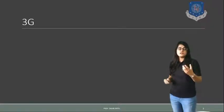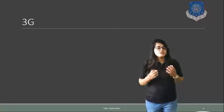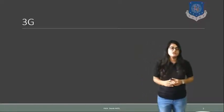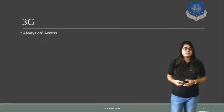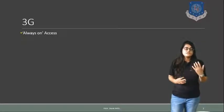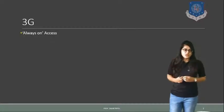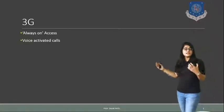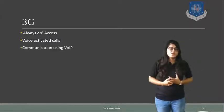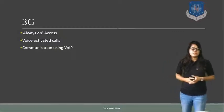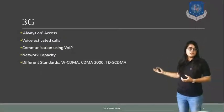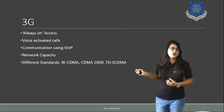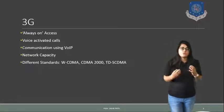Now in this session let us start with the 3rd generation wireless communication. Here we can develop the enhanced data rate for this 3rd generation, and we can say that it is the modified version of EDGE. The features it particularly provides compared to the 2nd generation standard: first, it allows always-on type of access; next, it provides voice activated call; and communication over VoIP — Voice over Internet Protocol — is possible with the 3rd generation with enhanced network capability. The different standards supported by the 3rd generation are WCDMA, CDMA 2000, and TD-CDMA — that is Time Division Synchronous Code Division Multiple Access.